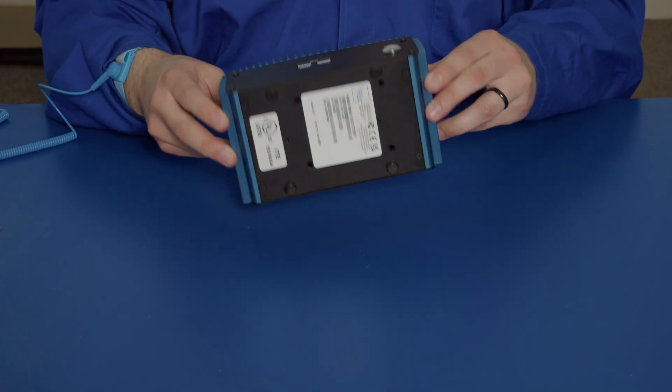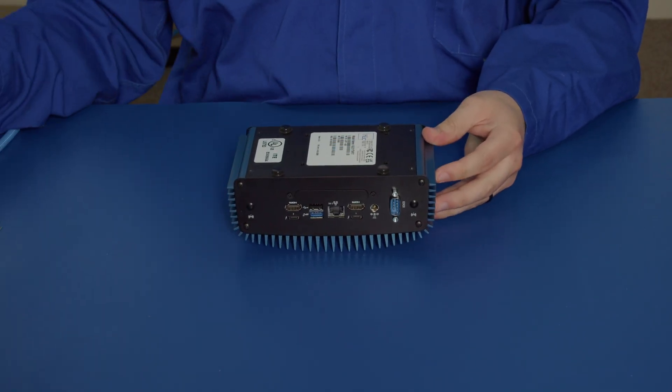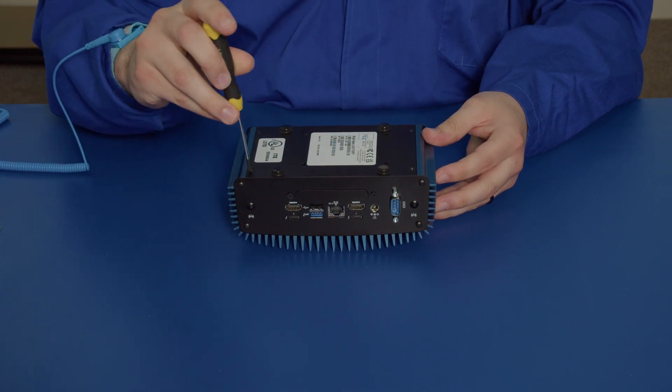So now we're going to flip the unit upside down and unscrew the four screws in each corner. I'll do that now.